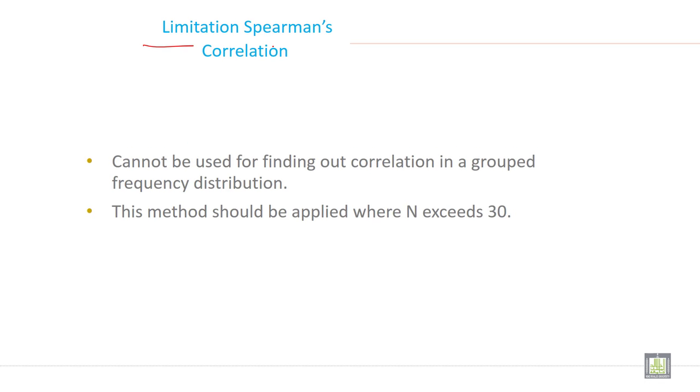What are the limitations of Spearman correlation? It cannot be used for finding out correlation in a grouped frequency distribution. When you have data in a grouped frequency, you cannot apply this kind of correlation coefficient. You need only discrete data or raw data to calculate rank correlation.